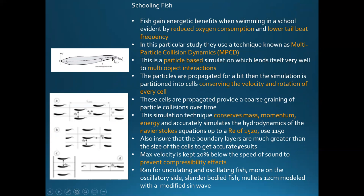These cells are still very small but bigger than point particles. This technique conserves mass, momentum, and energy, and accurately simulates Navier-Stokes up to Reynolds number 1500 — the simulations run at 1100, well within validated range. They also ensure the boundary layer is always bigger than cell size and that the speed of sound is never exceeded. They ran for carangiform slender-body swimmers — specifically using a mullet body of 12 centimeters — with a modified sine wave for the swimming mechanism.